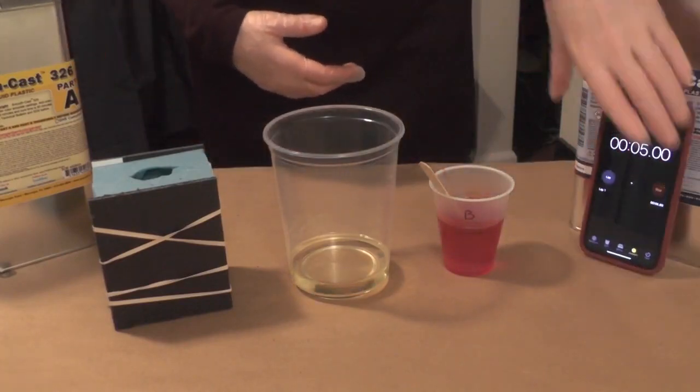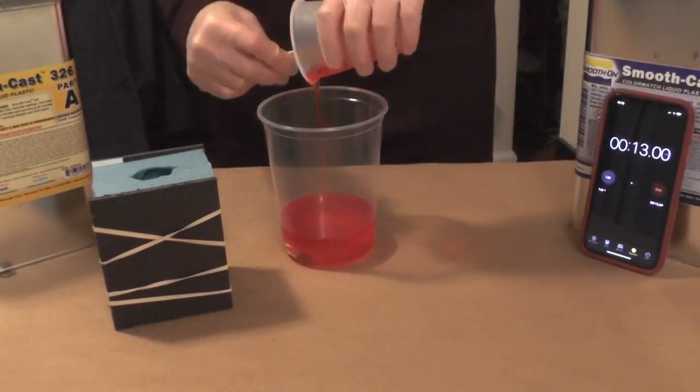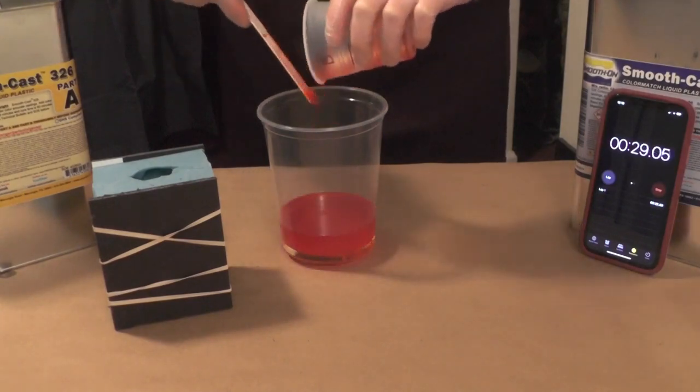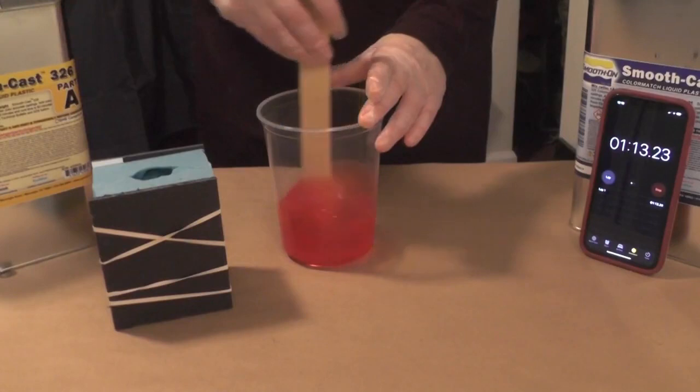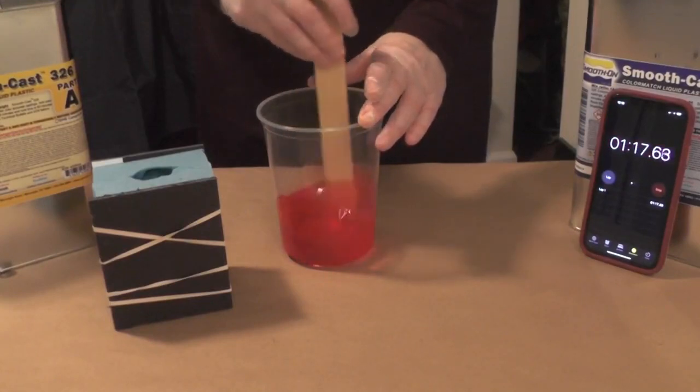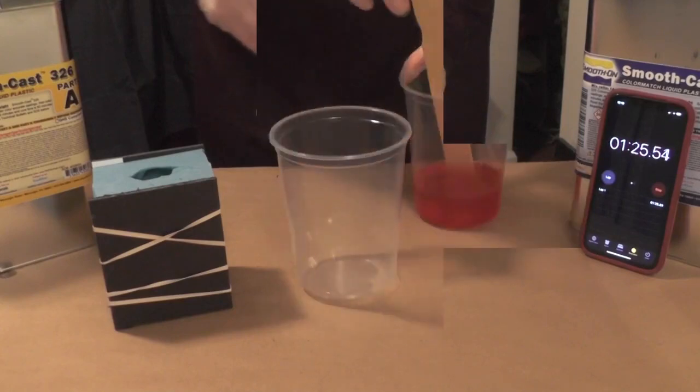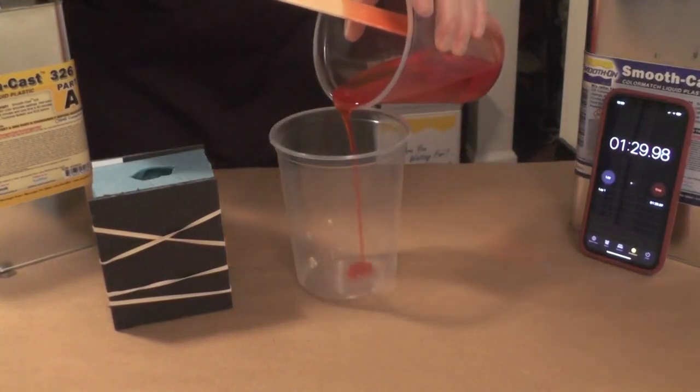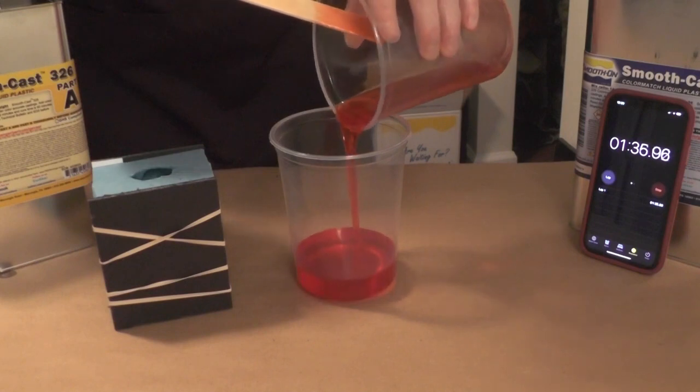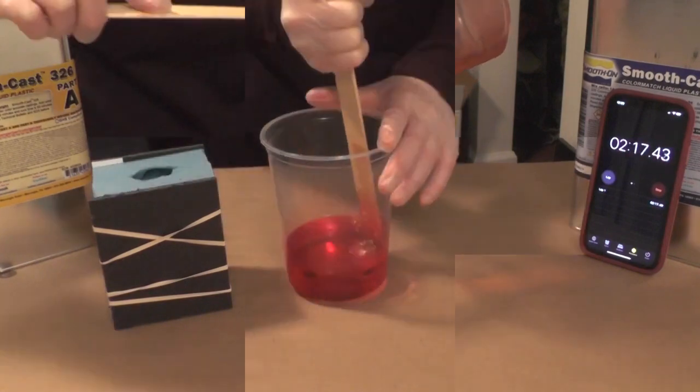Oh, but before I do that, I'm just going to grab my phone and set a timer. I like to set a timer when working with materials so I can keep track of the pot life. The pot life on the Smooth Cast 326 is 7 to 9 minutes. This is the working time you have before the material starts to set up. And you can see here I've mixed the material and then I double mixed it by pouring it into a second clean container.